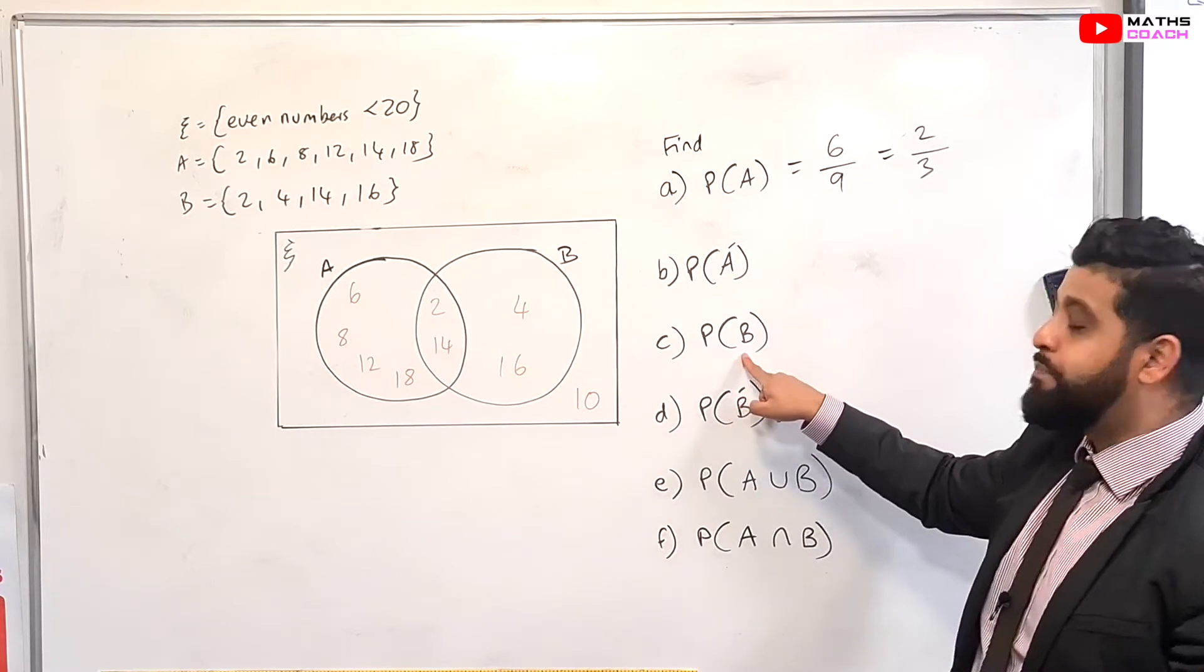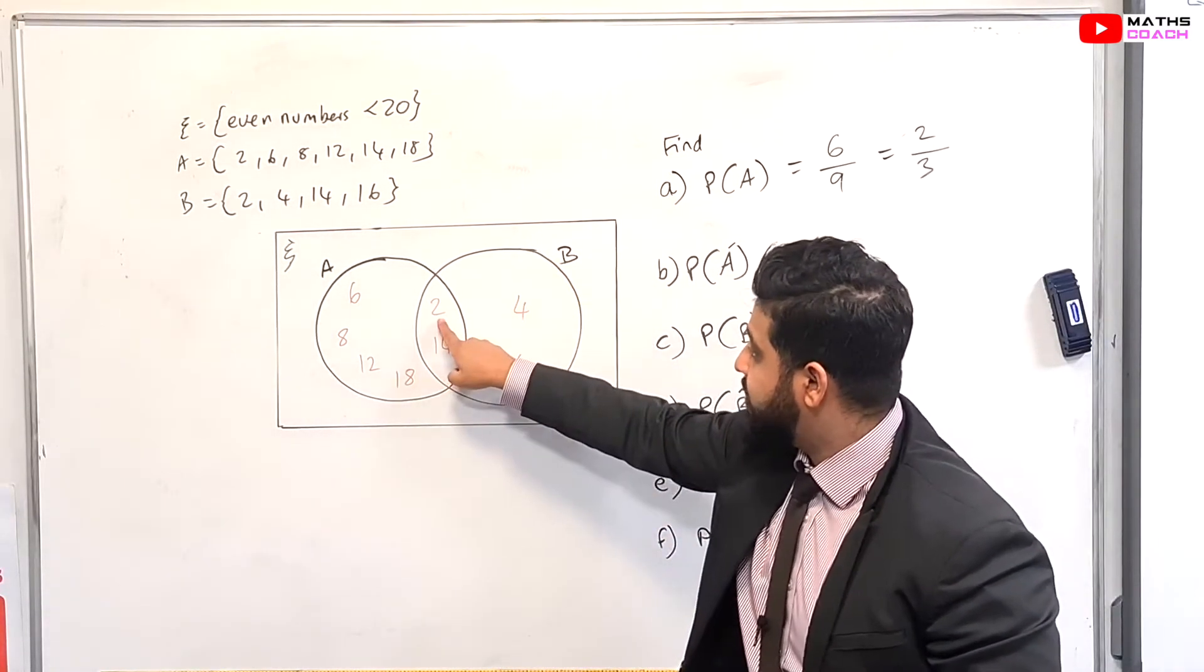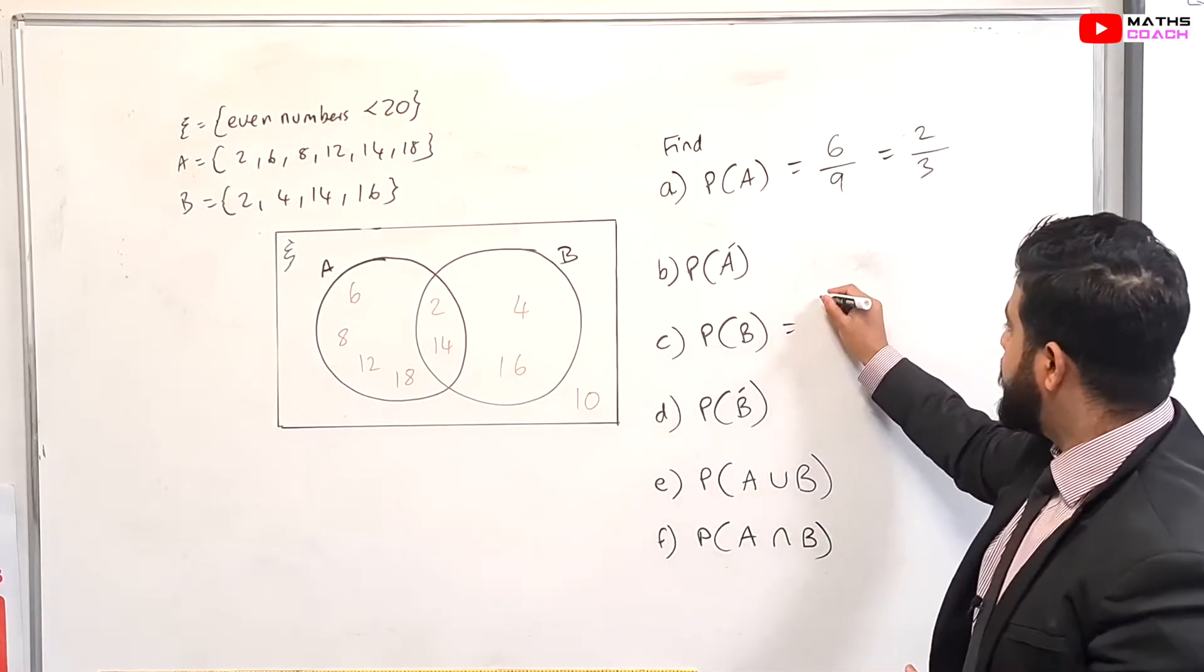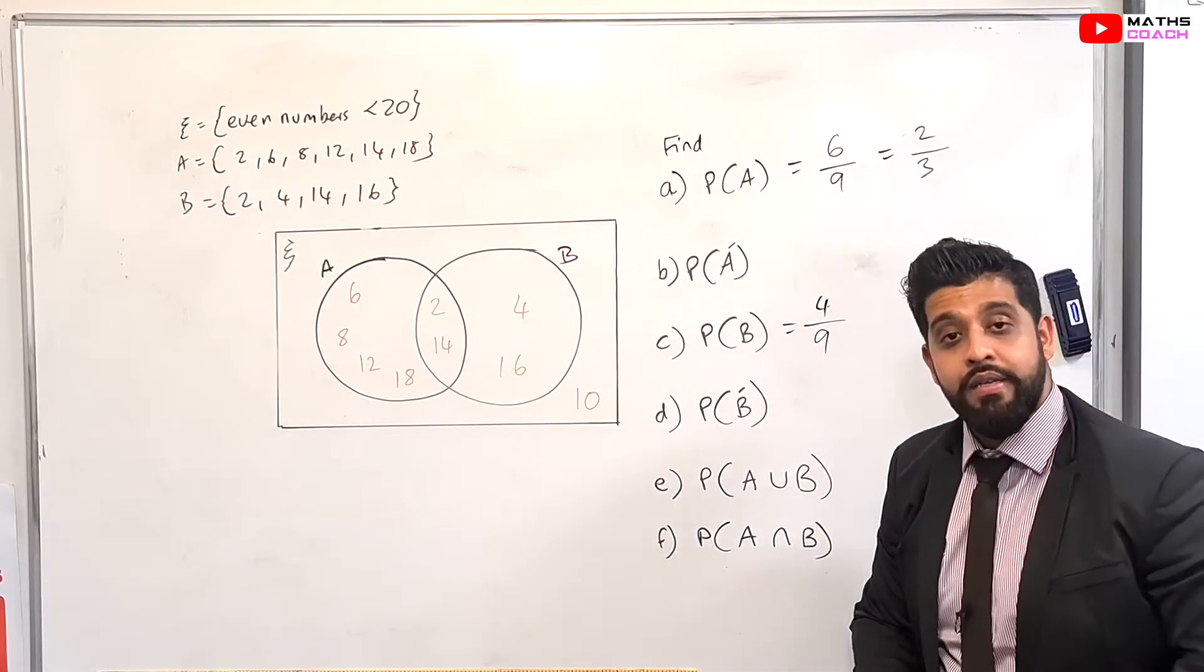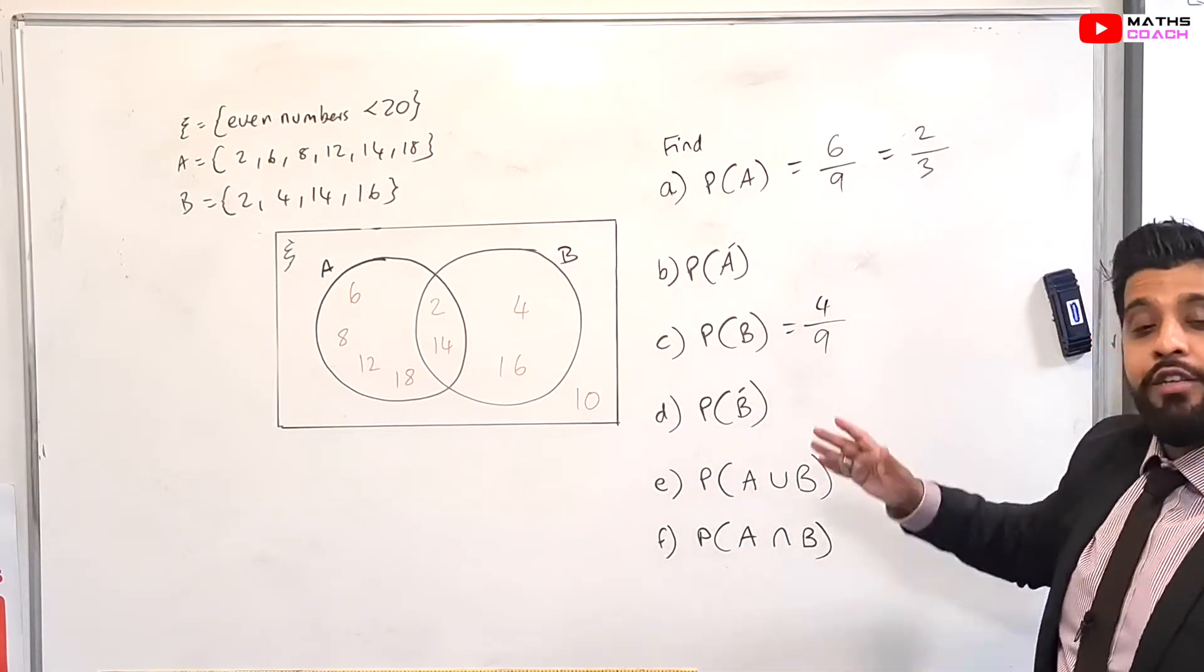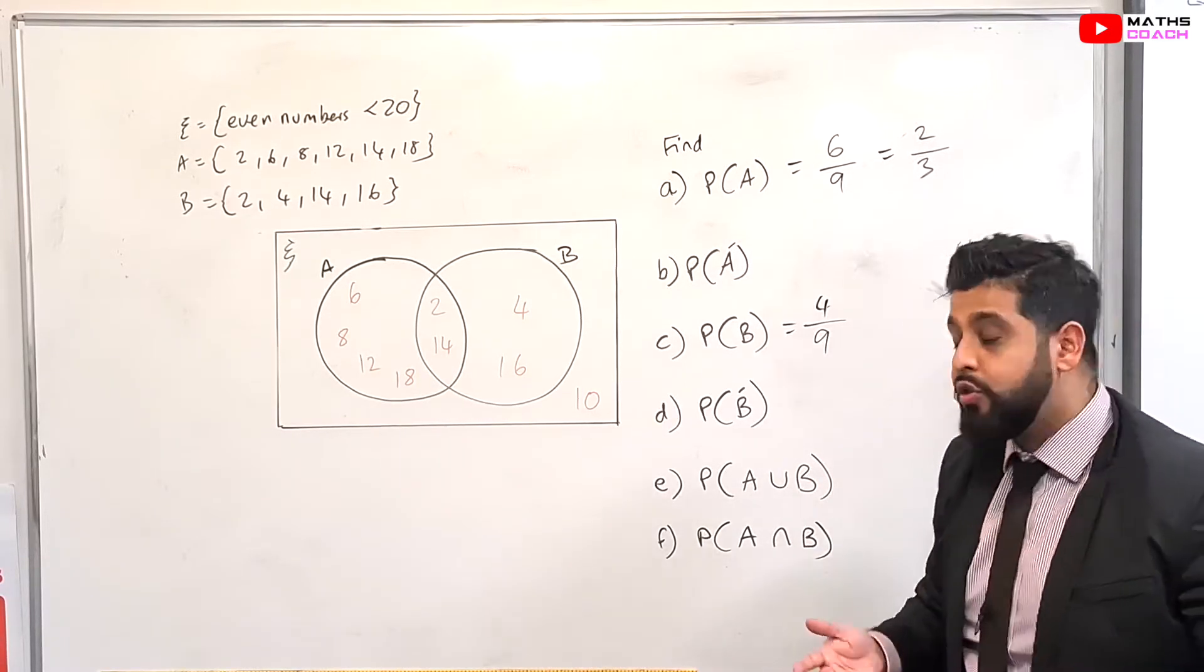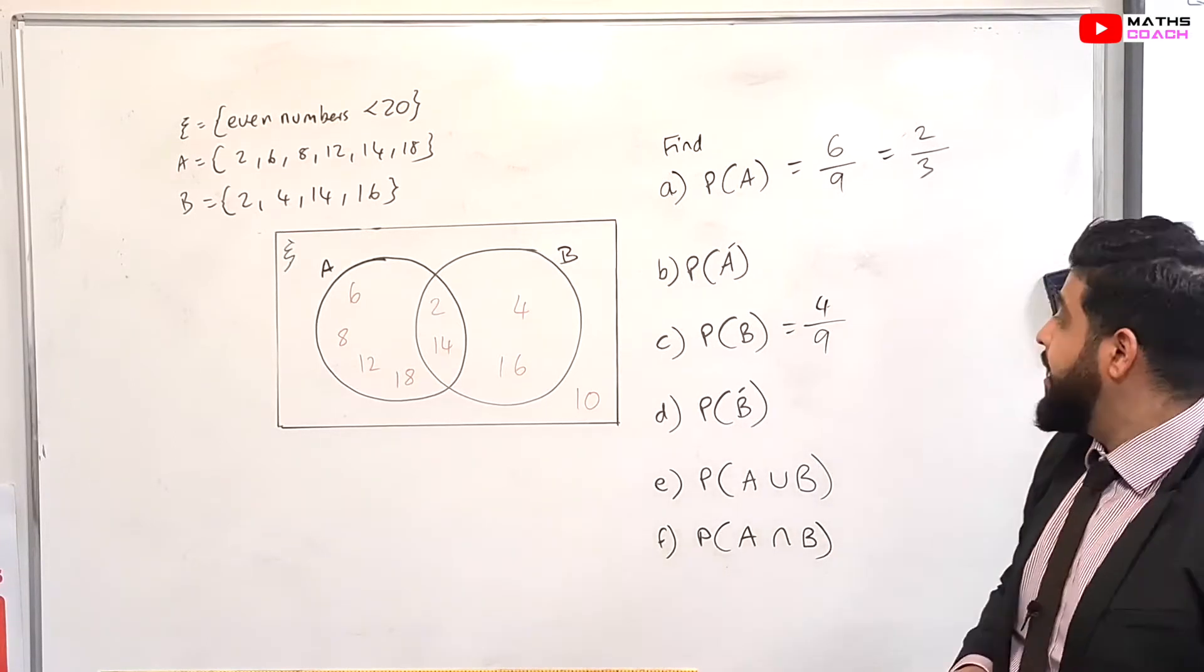Okay, so the probability of B happening. So again, circle B, what does it contain? Contains 1, 2, 3, 4 numbers. So therefore, 4 out of the total, which is 9. So 4 over 9 is our answer. So the answer 4 over 9, you can leave it like that, or you could try to simplify if it allows you. But you can see that 4 and 9 do not have any common factors, so you can't cancel down and simplify further.